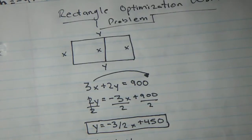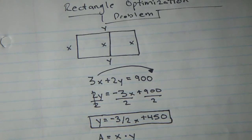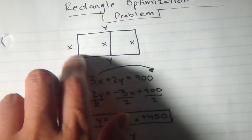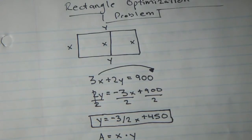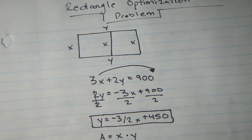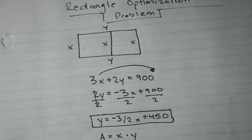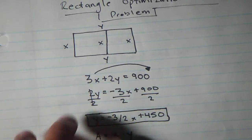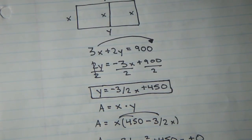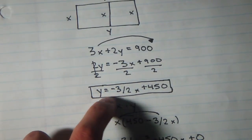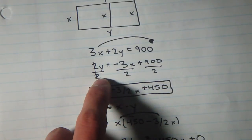Another problem I did was a rectangle optimization problem. The image labels the terms: there are 3x lengths and 2y widths, so the perimeter equation is 3x plus 2y equals 900, since there are 900 meters of fencing available. We need to find the dimensions. I brought 3x to the other side to get 2y equals negative 3x plus 900, then isolated y by dividing everything by 2, giving y equals negative 3 over 2 times x plus 450.